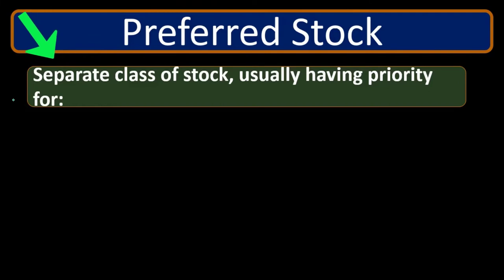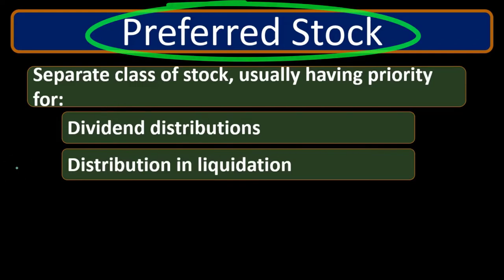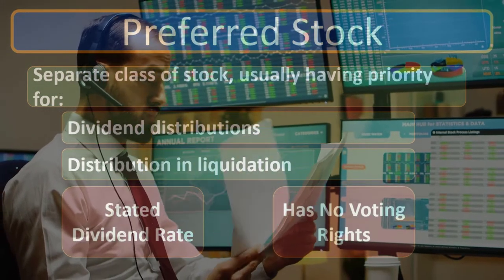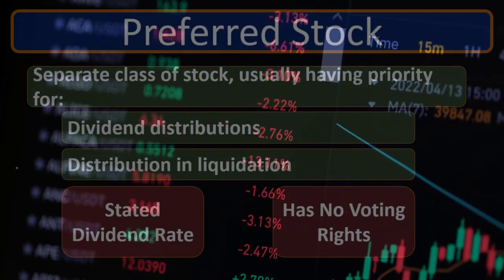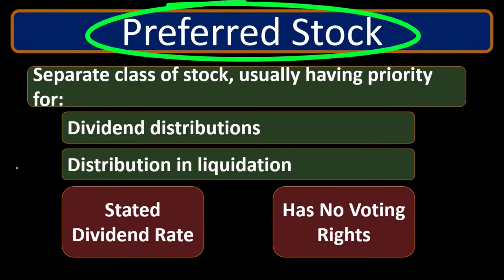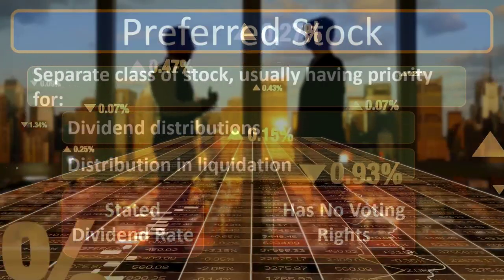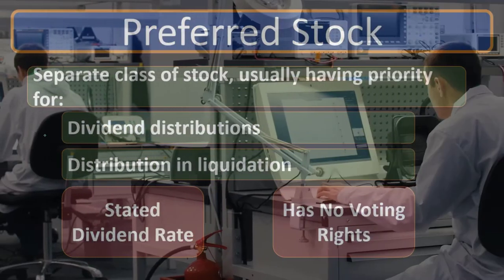Preferred stock is a separate class of stock that usually has priority for dividend distribution and distribution in liquidation — that's where the 'preferred' comes into play. Note that preferred stock doesn't have the voting capacity of common stockholders. If you want to have influence in the company, you typically want common stock because that gives you voting rights. Also, as a company does well over time, the common stock will generally do better — you're investing in a more long-term perspective.